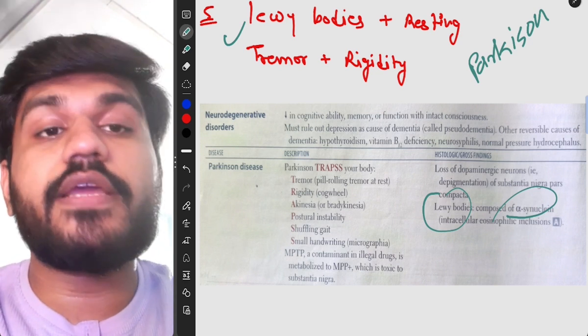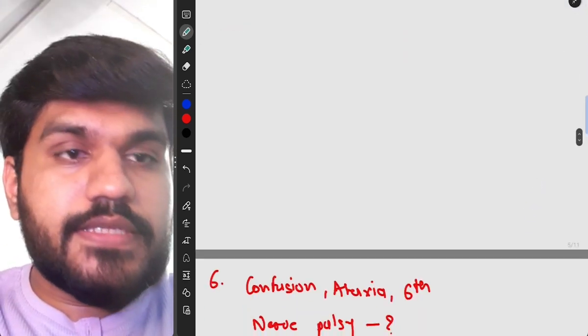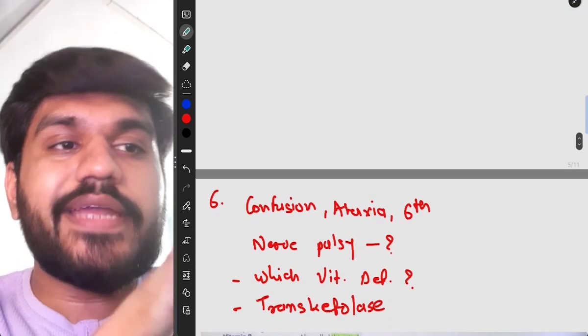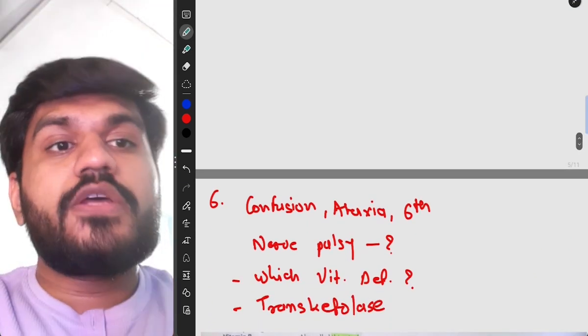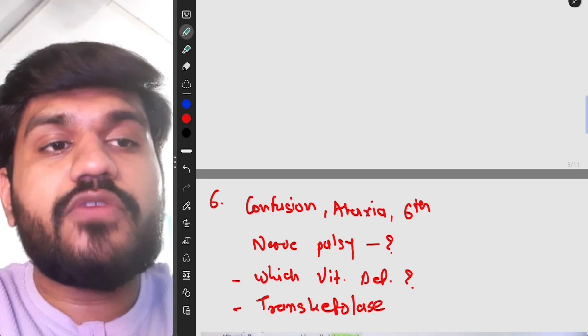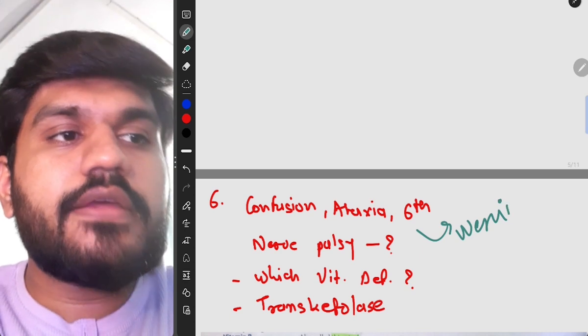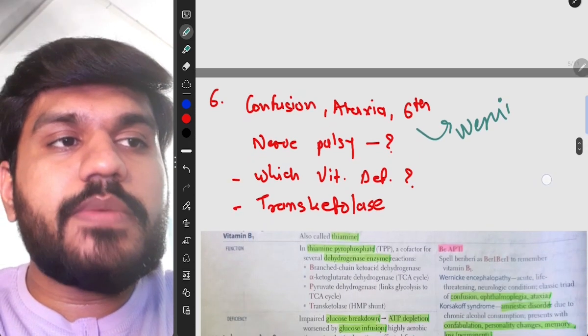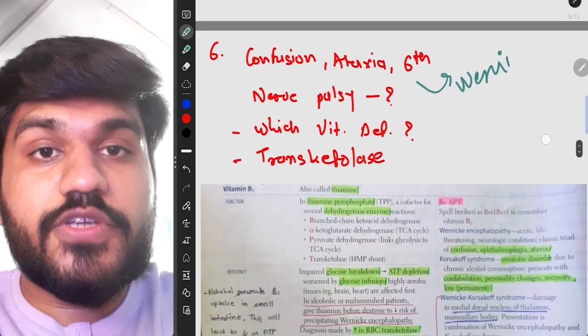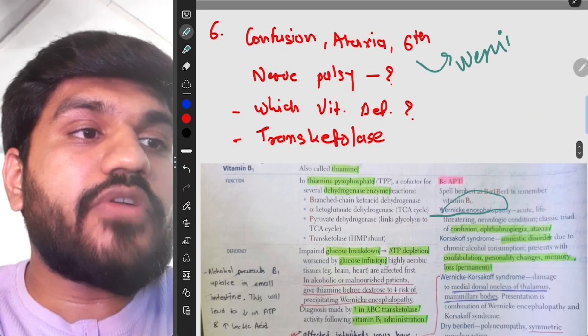Now we will see the sixth question which is confusion, ataxia and sixth nerve palsy. So confusion, ataxia and sixth nerve palsy is very repeatedly asked question and this occurs in Wernicke. This is typical vitamin B1 deficiency, thiamine deficiency.